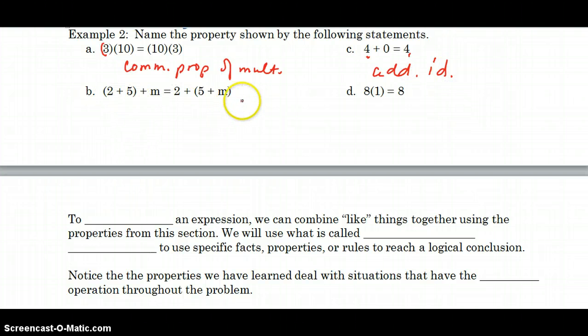I see some parentheses. The only one that had parentheses in it was the associative property. And this is the associative property of addition because I have addition signs. 5 associated with 2 and then 5 associated with M.